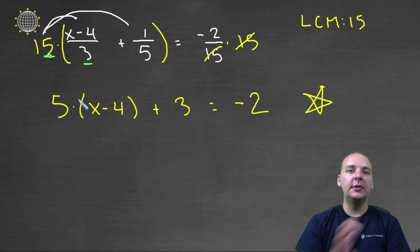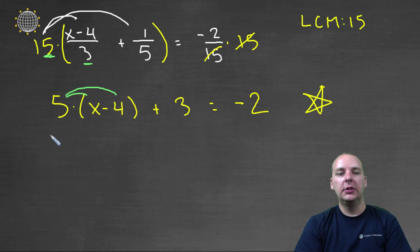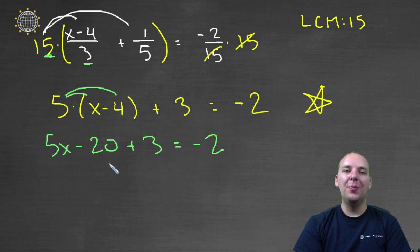We can simplify both sides, so we could distribute the five. So we'd have five x minus twenty, plus three, equals negative two. We can combine like terms, like the negative twenty and the three. So we'd have five x minus seventeen equals negative two.